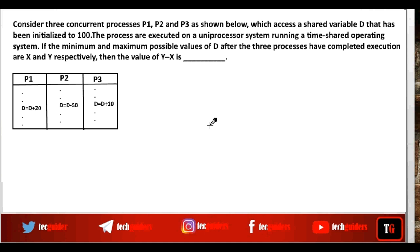Consider this question on race condition and critical section. Three concurrent processes P1, P2, and P3 access a shared variable d initialized to 100. The processes are executed on a uniprocessor system running a time-shared operating system. If the minimum and maximum possible values of d after the three processes complete are x and y respectively, find the value of y minus x.